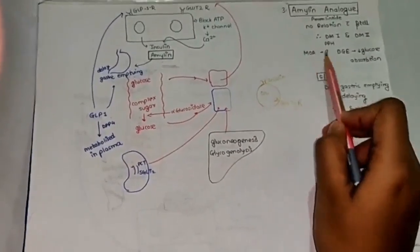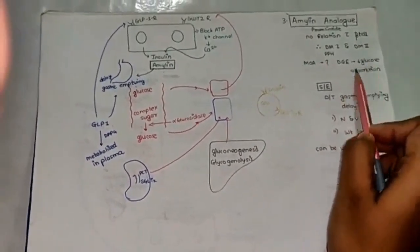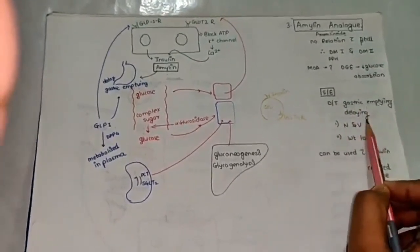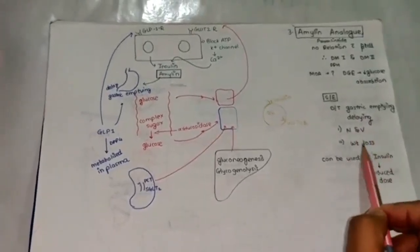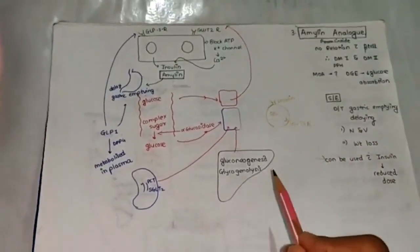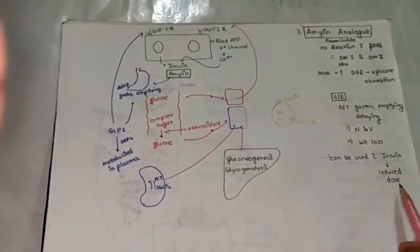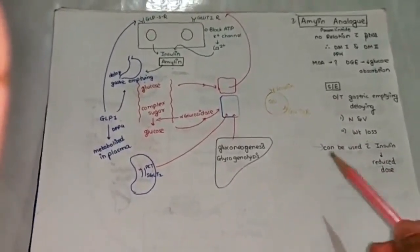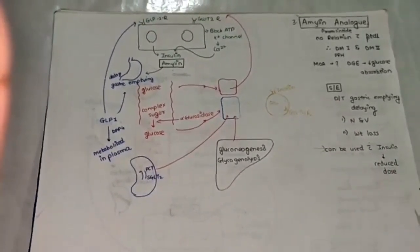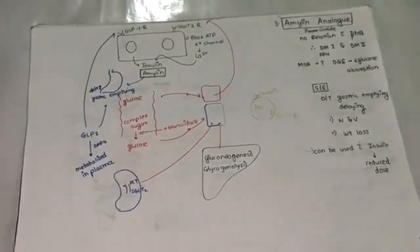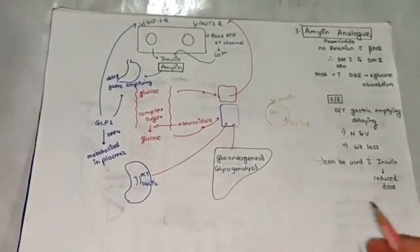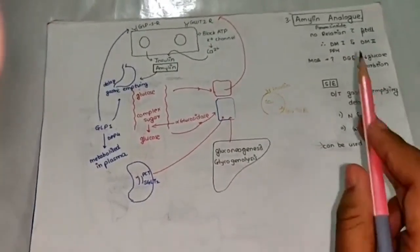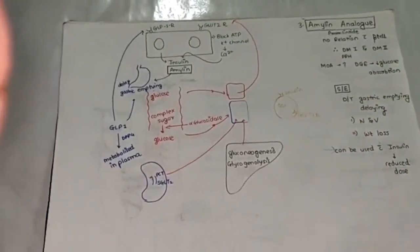This mechanism of action I have already told, because of delayed gastric emptying, it will reduce the glucose absorption. Same action, because of gastric emptying delaying, we will have two common side effects: nausea, vomiting and also weight loss. One more use, we know that if a person is on insulin and is given amylin along with insulin, it will help in reduction of doses of insulin. For example, if we are giving 20 units of insulin, after giving amylin along with it, we can use 10 units of insulin. But the problem is it has an acidic pH. Therefore, these two drugs, amylin analog and insulin, should not be combined in same syringe.